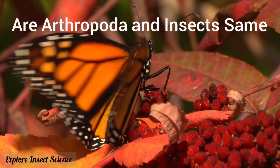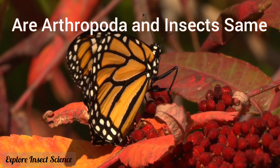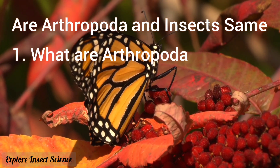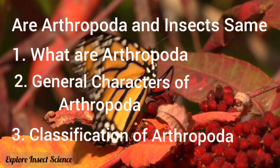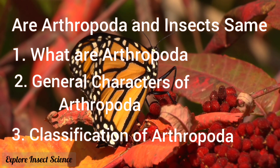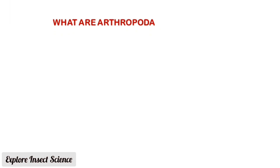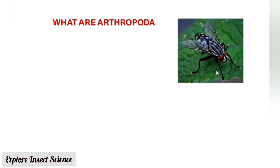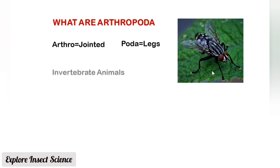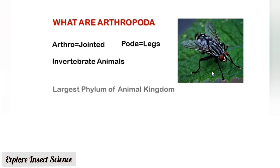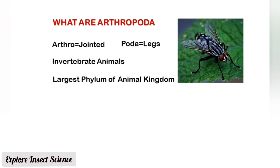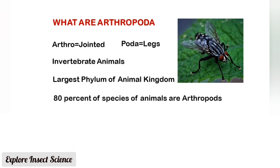Are Arthropoda and insects the same? To understand this, we need to look at the general characters and classification of Arthropoda. The word 'Arthropoda' is a Greek word: 'arthro' means jointed and 'poda' means legs. These are invertebrate animals.